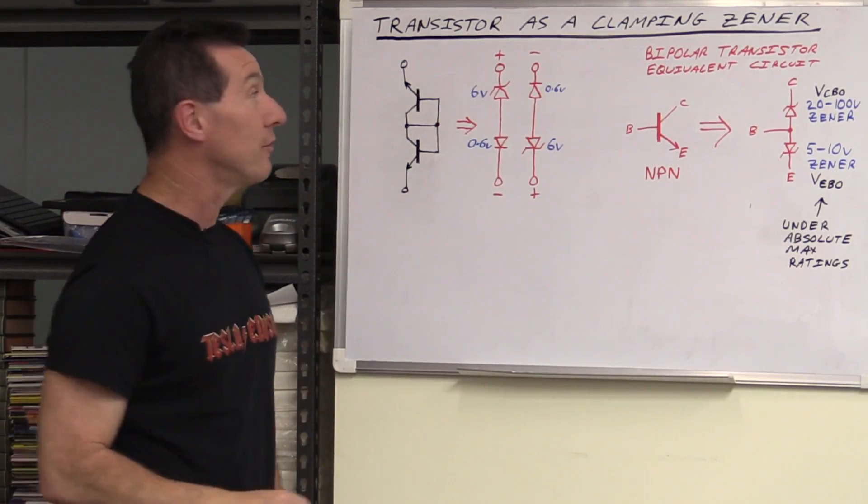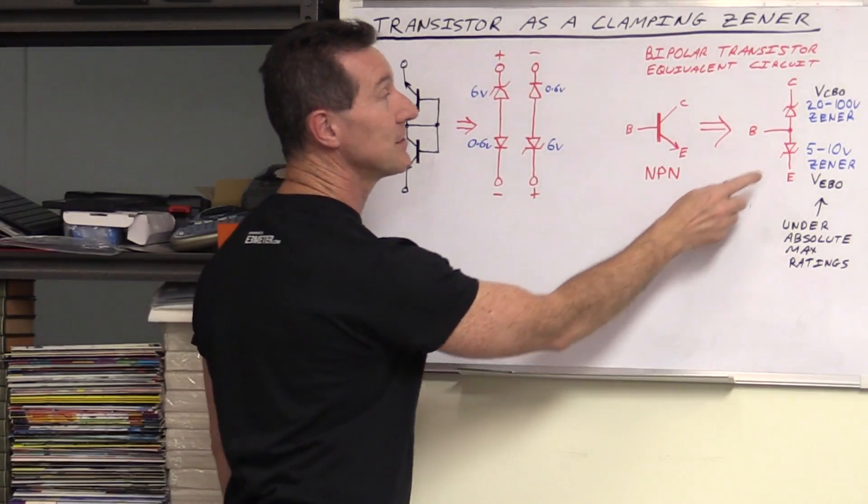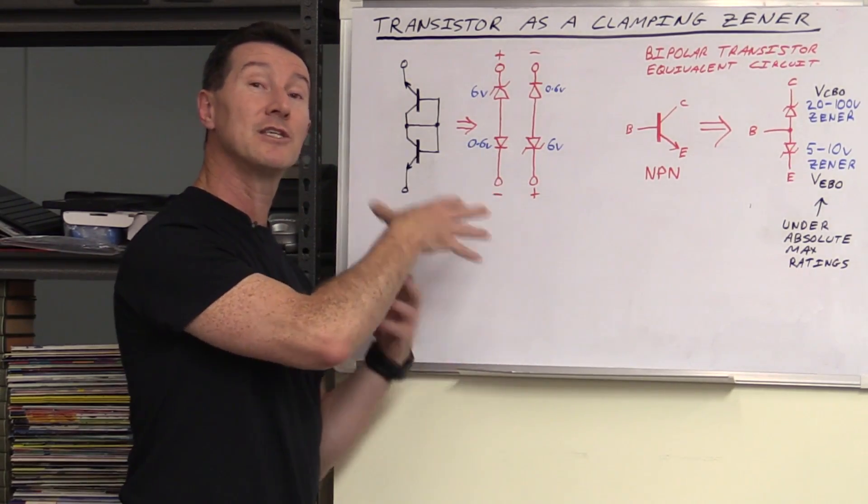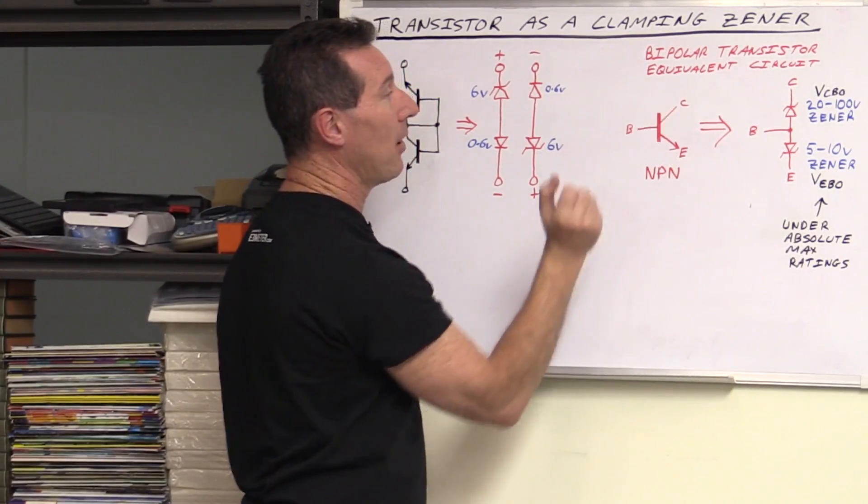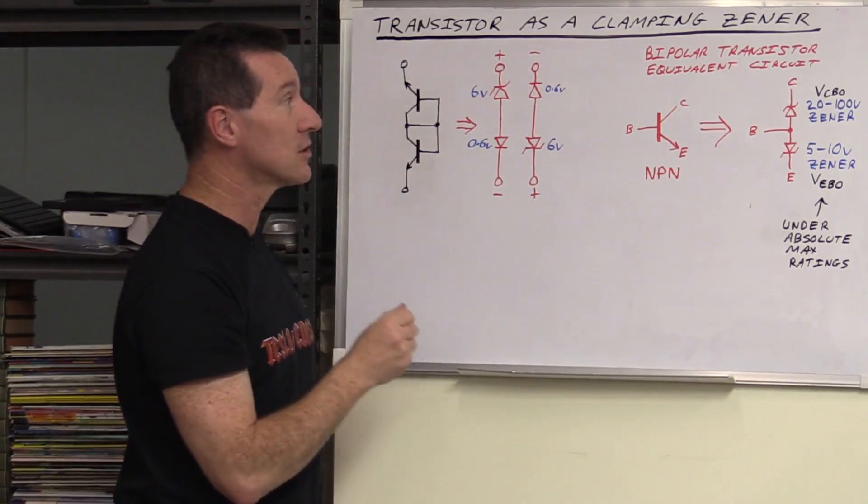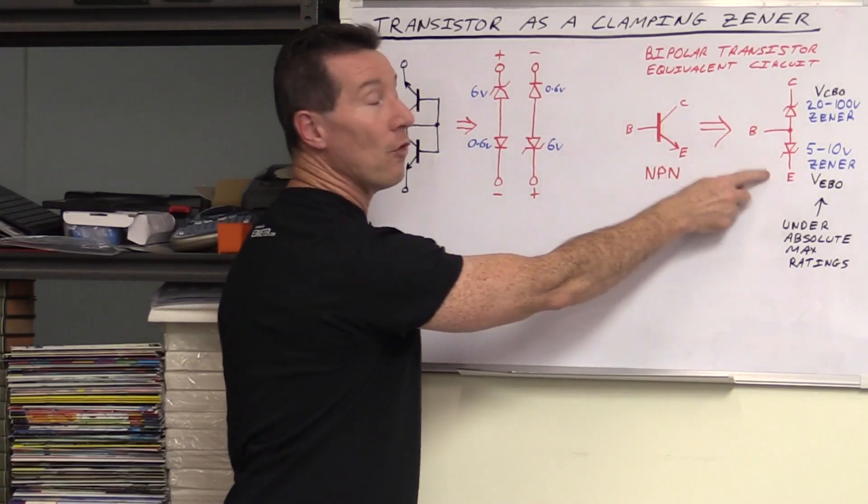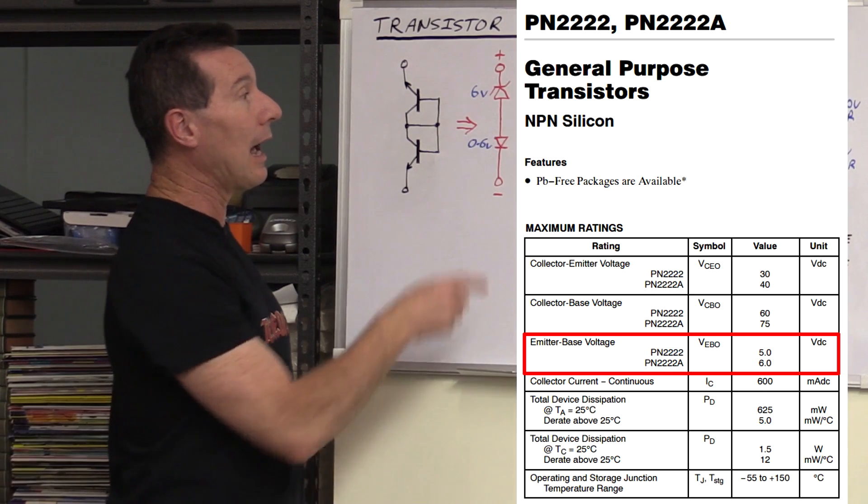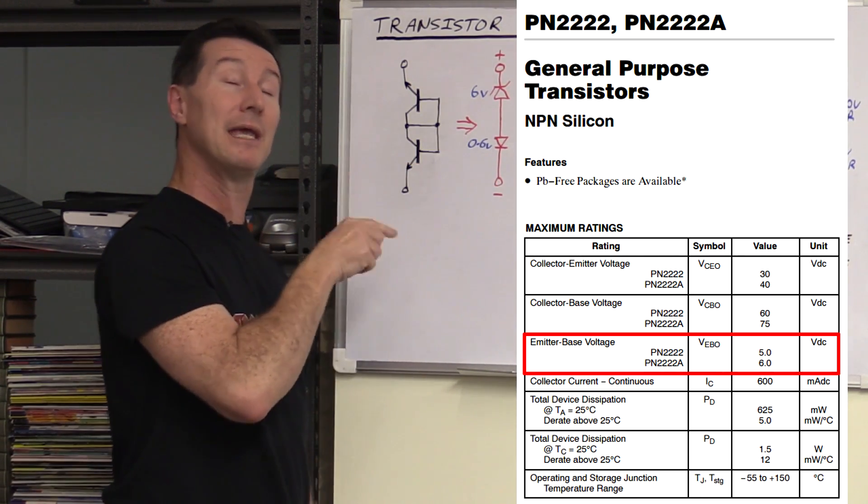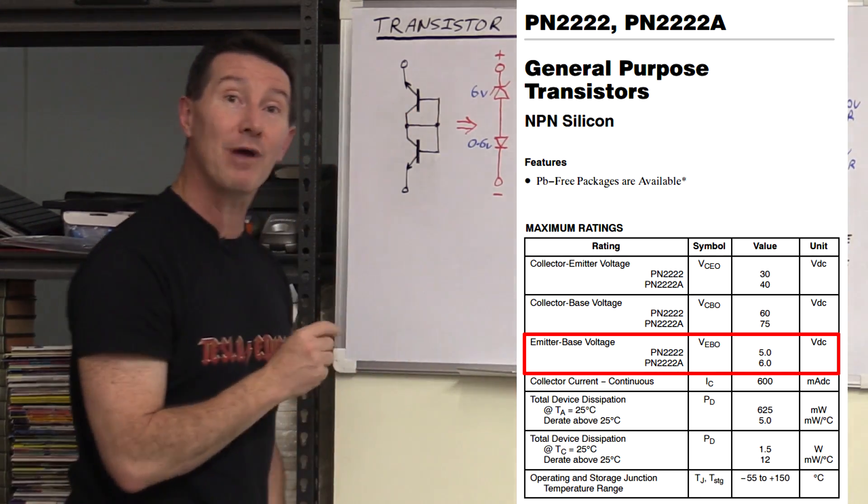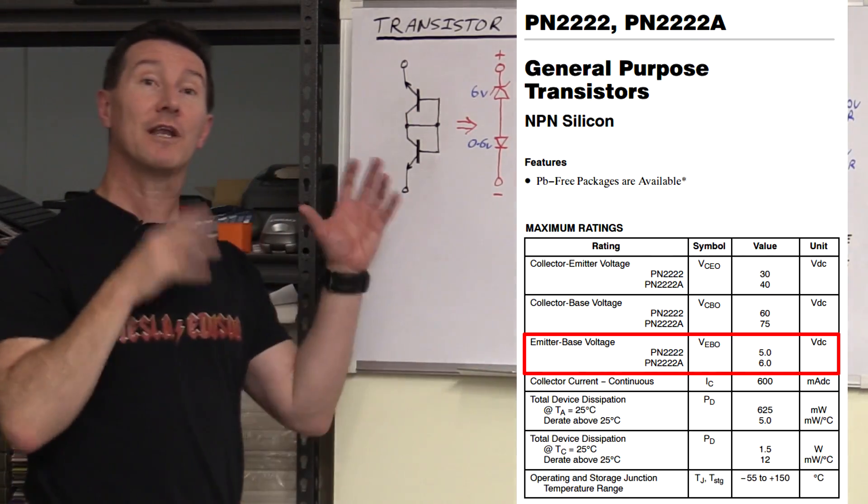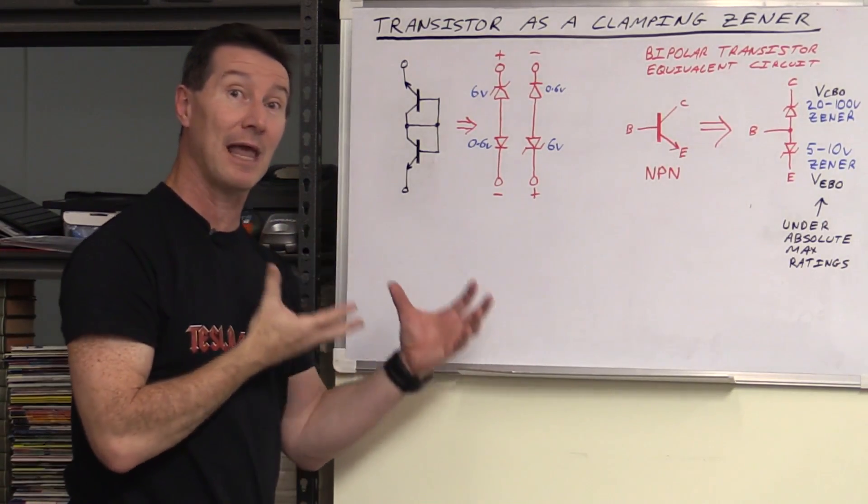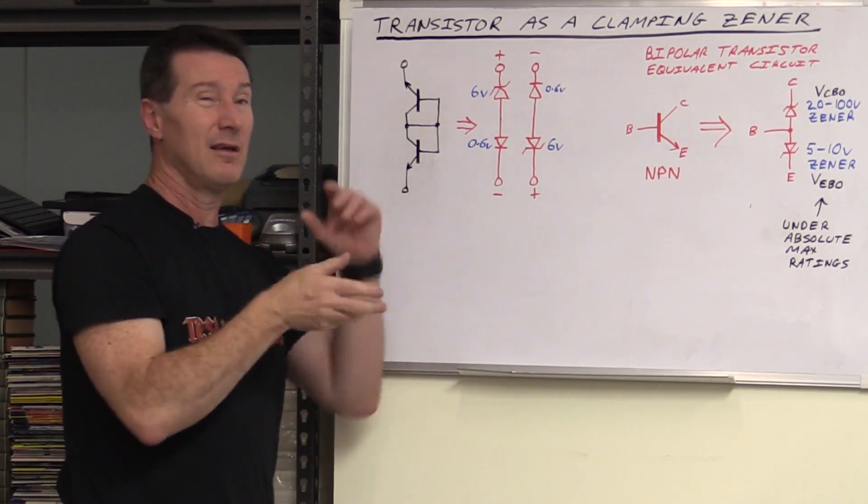Let's look at the equivalent circuit here. Base collector emitter of an NPN BJT, bipolar junction transistor. Because we're using it in a certain overload mode, it becomes relevant. There's actually two Zeners inside. One Zener from base to emitter. On the data sheet, VEBO or the voltage breakdown is the emitter base breakdown voltage. In reverse, it'll break down and act like a Zener at about five to ten volts. And base to collector, we've got VCBO.